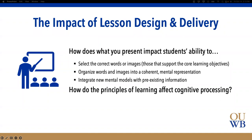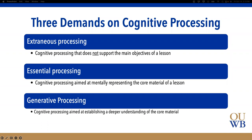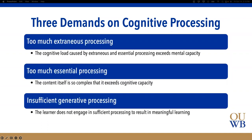There are three demands of cognitive processing: extraneous processing, essential processing, and generative processing. If there's too much extraneous processing, the cognitive load learners experience becomes overloaded — there's too much content on screen, some essential and some non-essential. Today we're really focusing on how to limit extraneous processing. In November we'll focus on essential processing, and in December on generative processing.